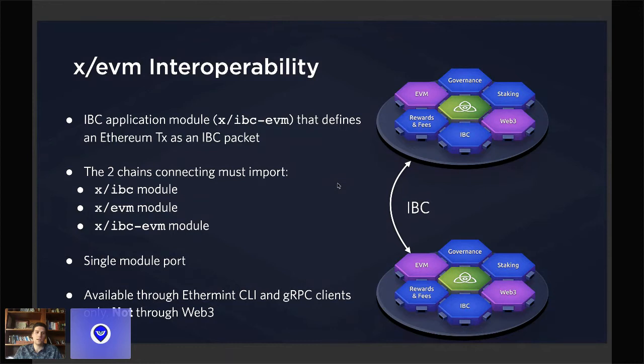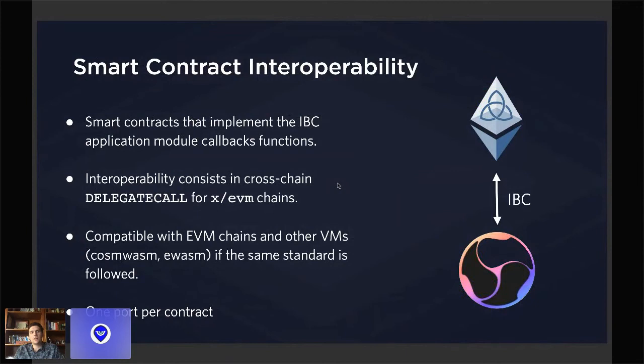In this case, the IBC-EVM module will have a single port so that all the channels will bind to that specific port. This will be available through the CLI and gRPC clients and not through Web3 clients. This leads to smart contract interoperability: within your Solidity smart contract on Ethermint, you will be implementing the IBC application callback function that will allow you to transfer tokens to another smart contract within another chain that has one port per contract.